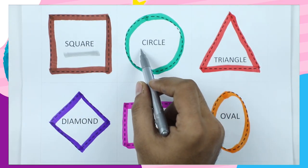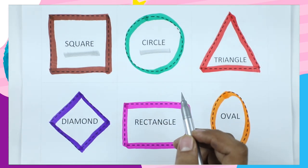Circle. C-I-R-C-L-E. It's a circle with green color.